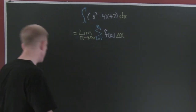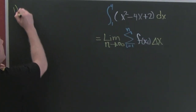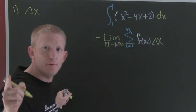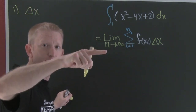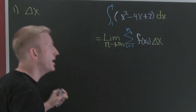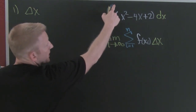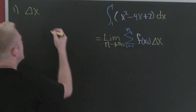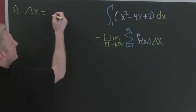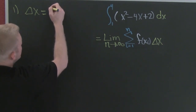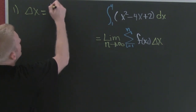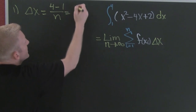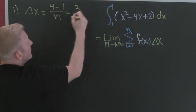The first thing we need to do is step one: find my delta x. That's going to be b minus a divided by n, where b is my upper limit and a is my lower limit. So this is 4 minus 1 divided by n, which gives me 3 over n.